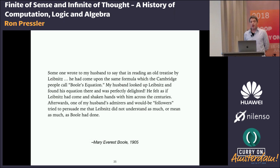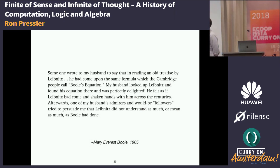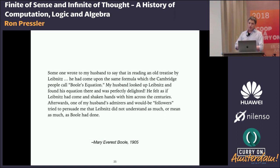Leibniz's writings on formal logic started being uncovered in the 1840s. Boole's wife, who was a mathematician in her own right, writes: 'Some men wrote to my husband to say that in reading an old treatise by Leibniz, he had come upon the same formula which the Cambridge people called Boole's equation — that is, A squared equals A. My husband looked up Leibniz and found his equation there and was perfectly delighted. He felt as if Leibniz had come and shaken his hands with him across the centuries.' The full extent of Leibniz's contribution only became gradually known, and the first book about Leibniz's formal logic was published only in 1900 by a young philosopher named Bertrand Russell.